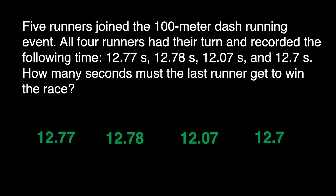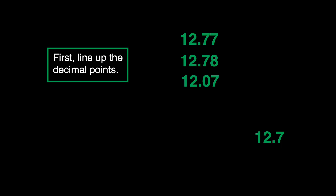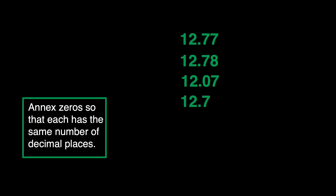How do we order decimals? There are rules to follow. The first one is to line up the decimal points. So let's line them up, especially the decimal points. The next step is to annex 0 so that each number has the same number of decimal places. So we'll write 0. There we go — now they have the same number of decimal places.